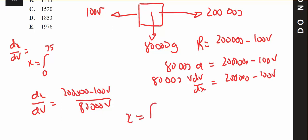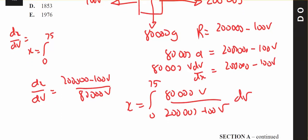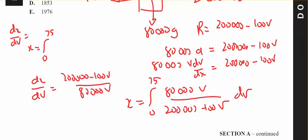So x will be the integral from 0 to 75 of 80,000v on top of 200,000 minus 100v dv. And I'm going to jump on the calculator.